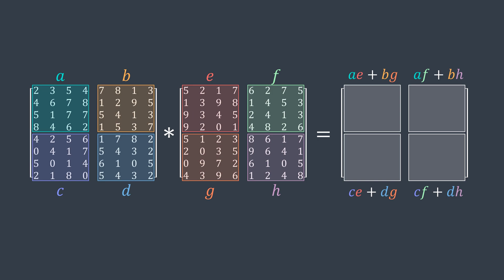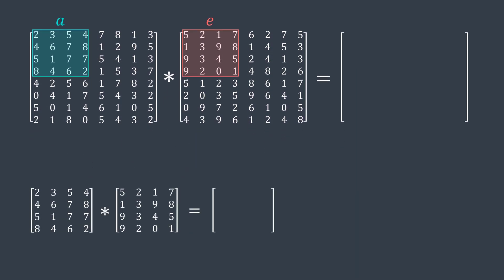But A, B, C, D, E, F, G, and H are also matrices. So to calculate AE, for example, we also need to do a matrix multiplication. And guess what, we use the same process. We split A and E into four parts each, and we do the necessary calculations to get the product, and so on and so on.